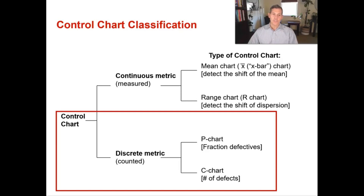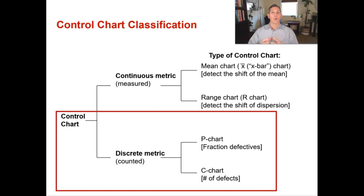In our last video we talked about control charts using the continuous metric — ones that can be measured. We went over the X-bar chart and the R chart. Now we're going to go over discrete metrics, where you can count. A P chart looks at the fraction defectives and a C chart looks at the number of defects. The R chart stands for range, the P chart for proportion, and the C chart for count. That's why those are called what they are called.